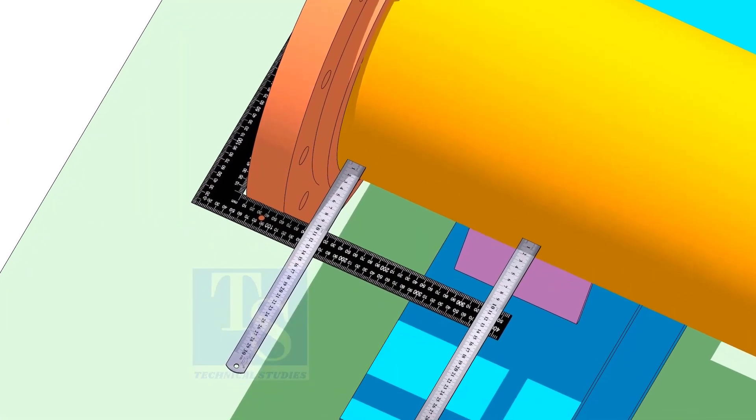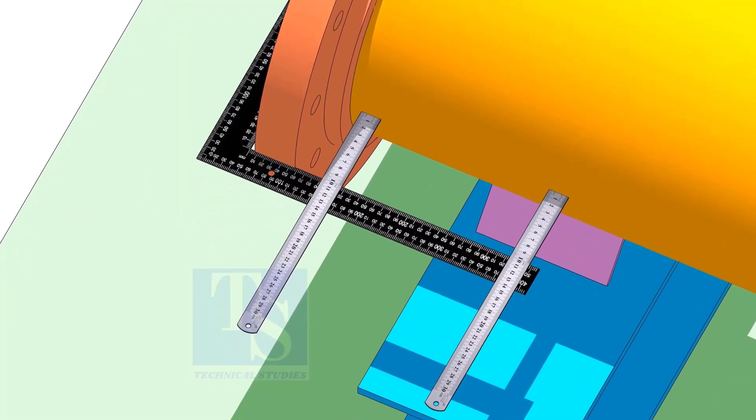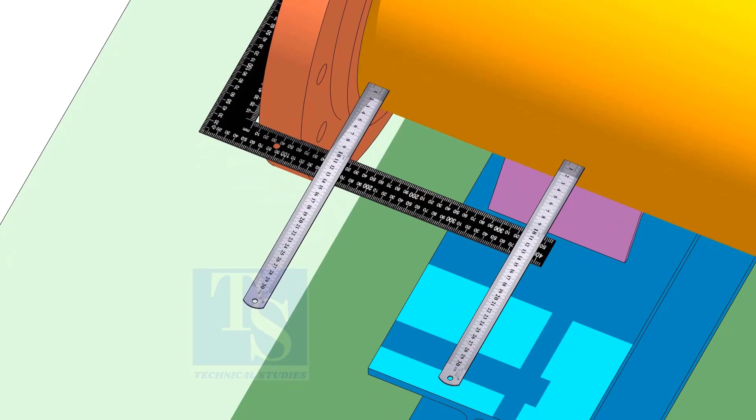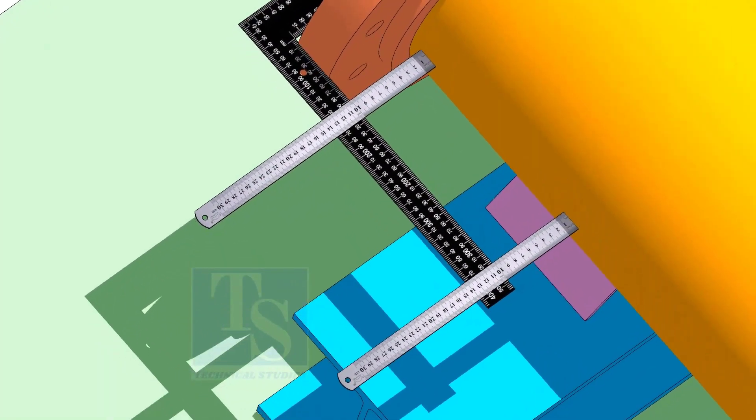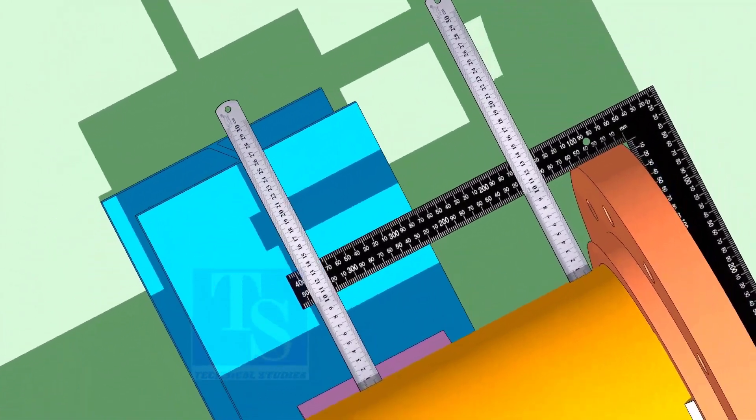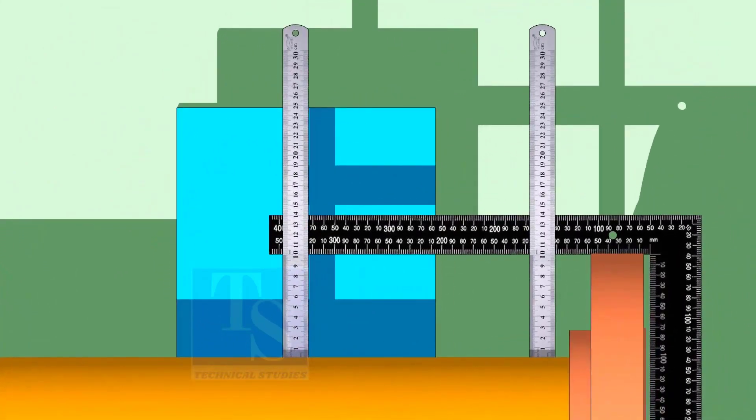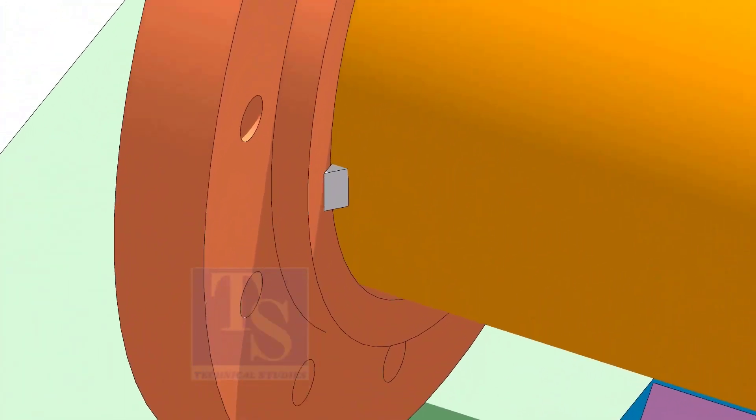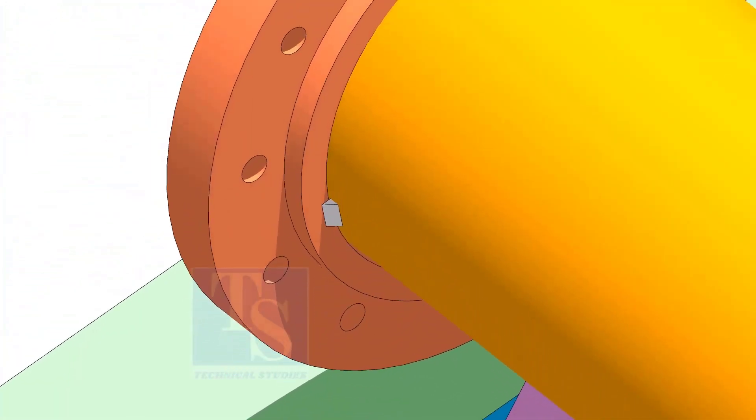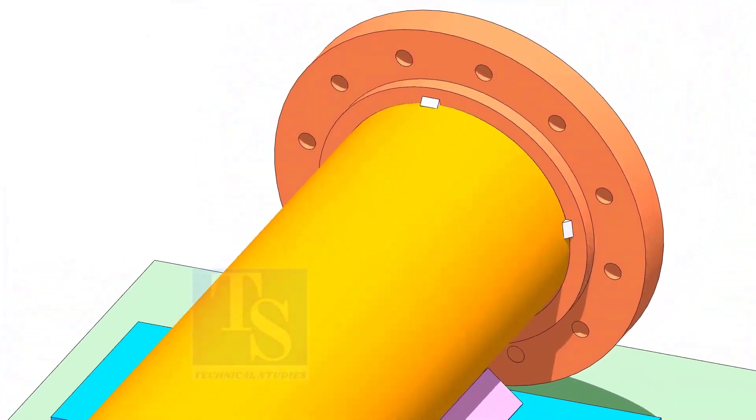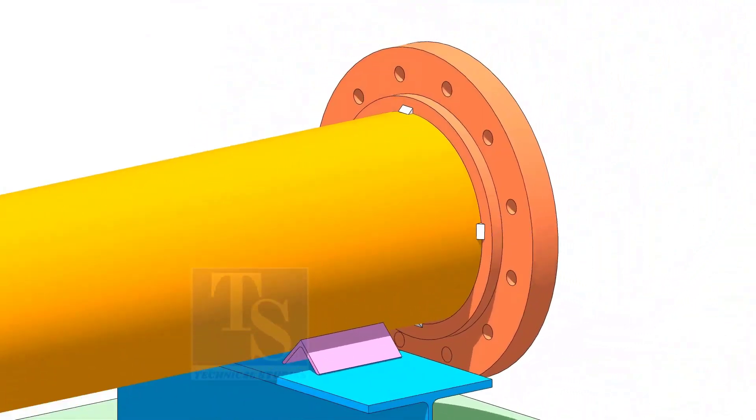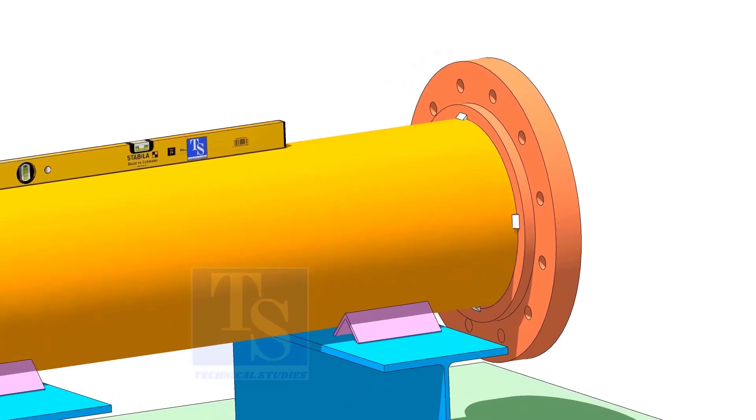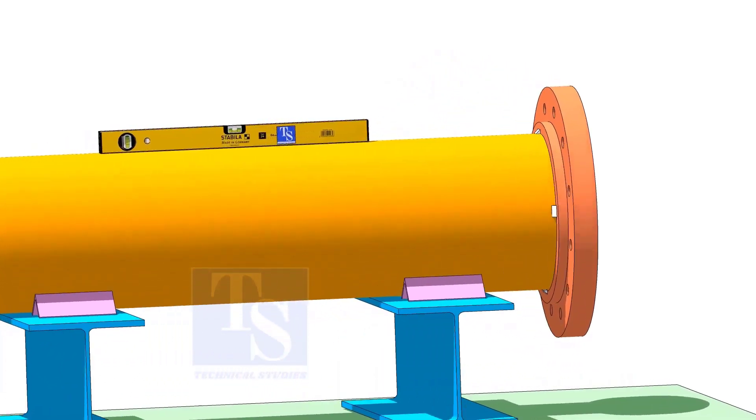Now, correct the squareness on the side and tack weld on both sides. After tacking the flange, correct the level of the pipe.